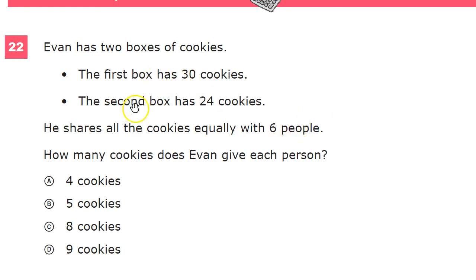So the combination — combining two things together — that's an addition process. And then when I get down here, 'shares all cookies equally' — that sounds like dividing a number. So I'm going to do some addition work here.